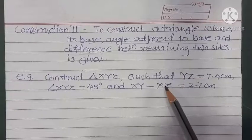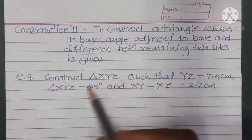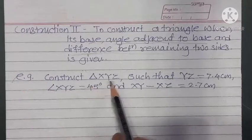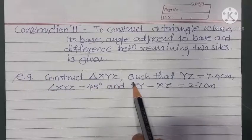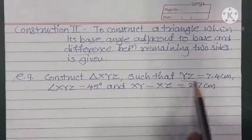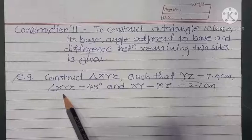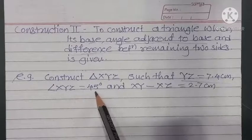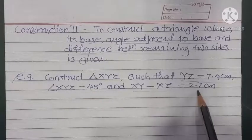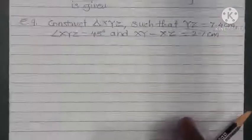There are two types of this construction. The first example: construct triangle XYZ such that YZ (the base) is 7.4 cm, angle XYZ is 45 degrees (the base angle), and the difference of the remaining two sides is 2.7.